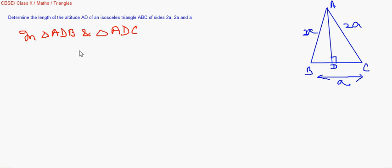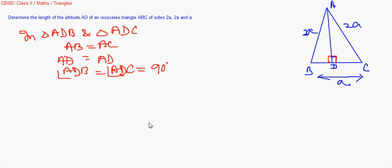All right, these two triangles, ADB and ADC. Let's see, I take in triangles ADB and triangle ADC. See, AB is equal to AC, it's already given because both sides are 2a. AD, oh sorry, AD is equal to AD, that means they are common.